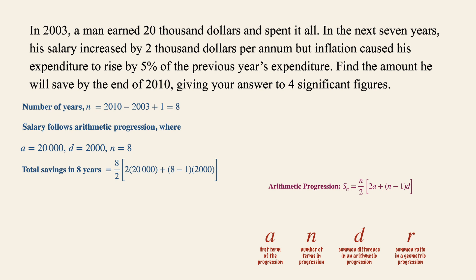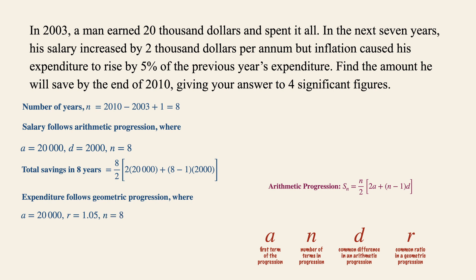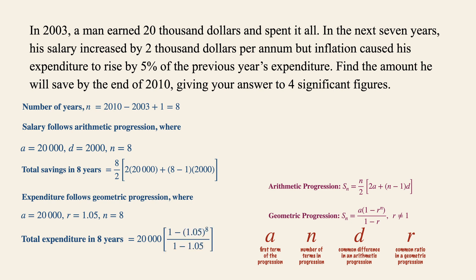The second part is the expenditure. The expenditure follows a geometric progression because it rises by a percentage each year. The first term is 20,000 as he spent all his salary in the first year, the common ratio r is 1.05 because it rises by 5% of the previous year's expenditure, and n is 8. The total expenditure uses the GP sum formula: 20,000 multiplied by one minus 1.05 to the power of 8, over one minus 1.05.